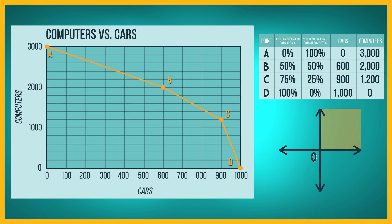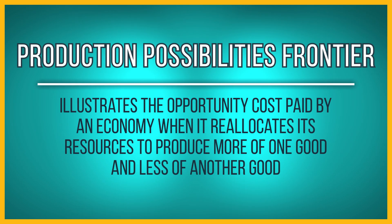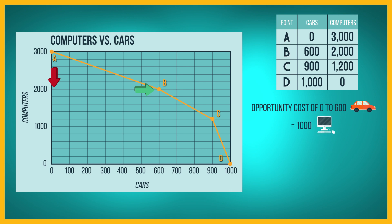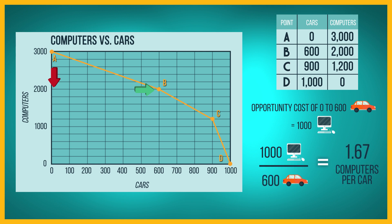The production possibility frontier illustrates well the opportunity cost paid by an economy when it reallocates its resources to produce more of one good and less of the other. When an economy is on its production possibility frontier, the opportunity cost it pays when it obtains more of one good is a reduction in another good it can produce. When the economy moves from point A to point B, the number of cars increases from zero to 600 and the number of computers decreases from 3,000 to 2,000. Therefore, the opportunity cost of these 600 additional cars is 1,000 computers. Division tells us that the opportunity cost of each extra car over this range is 1,000 computers divided by 600 cars, or 1.67 computers per car.